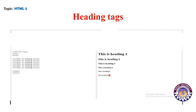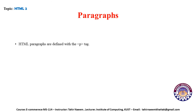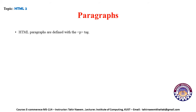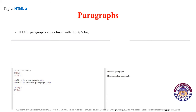HTML paragraphs are defined with the p tag. In the example, the paragraph starts with p and ends with slash p. Look at the result — this is the paragraph. If I start another paragraph, it will automatically move to the next line. This is another paragraph — look at the results shown on the side of the screen.